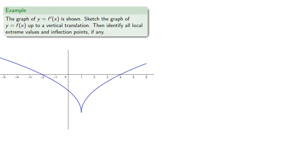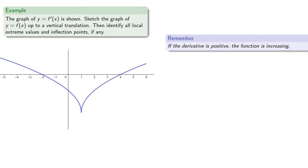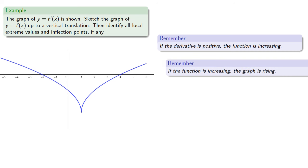Suppose we have the graph of y equals f prime of x. There are three ideas we want to keep in mind. First, if the derivative is positive, the function is increasing. If the function is increasing, then the graph is rising.